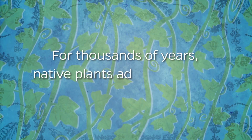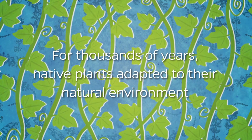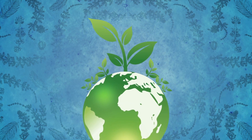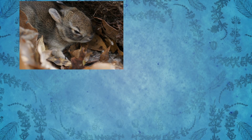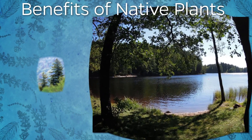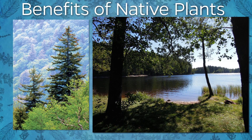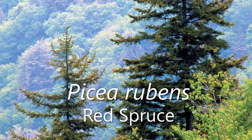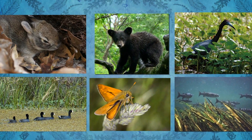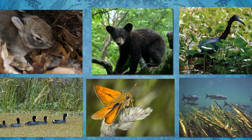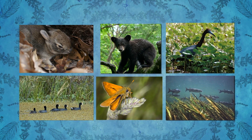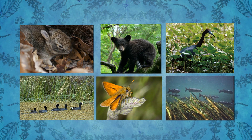For thousands of years, native plants adapted themselves to their environment. They evolved — changed slowly over time — to grow in the conditions around them. They provide food and shelter to animals, and stability to our shorelines and fields. Native plants are eaten by insects and animals that evolved alongside them. This, along with the climate, disease, and competition with other species, keeps native plants from growing out of control.